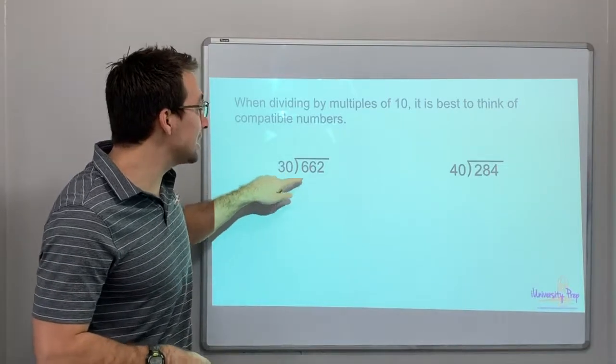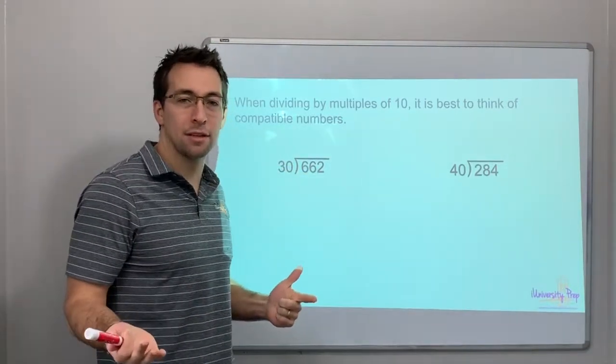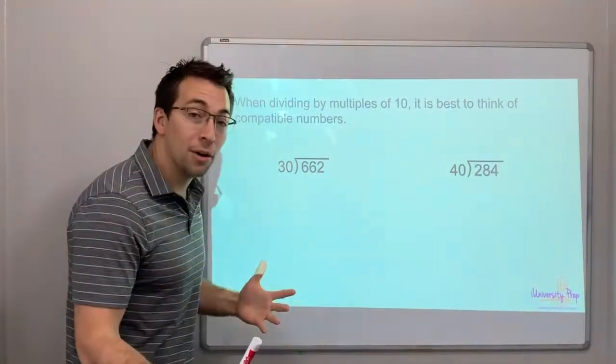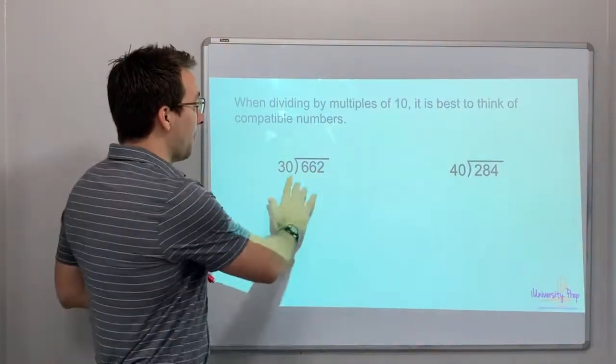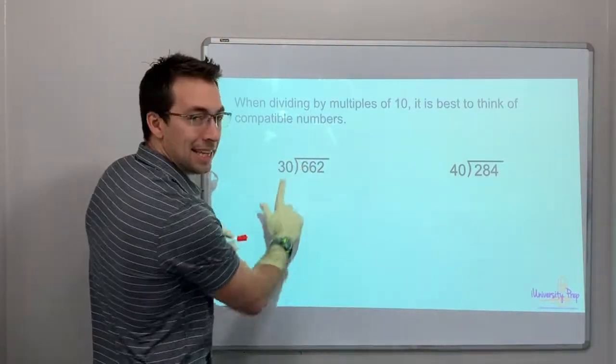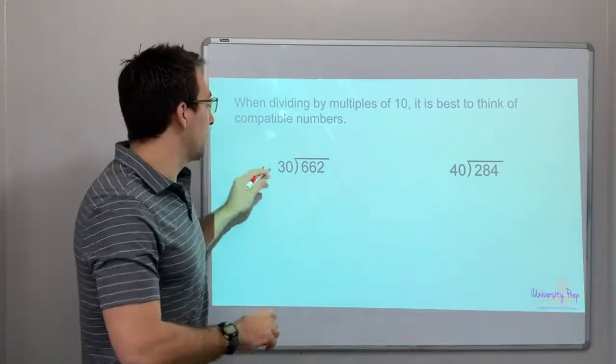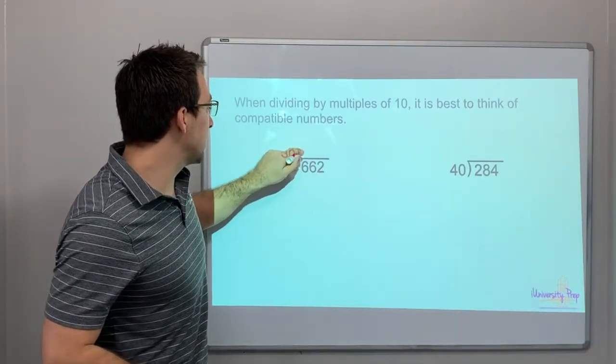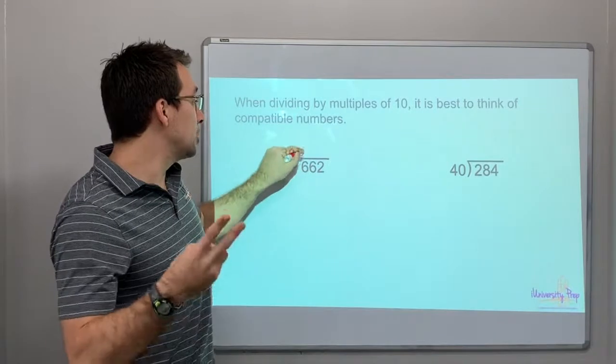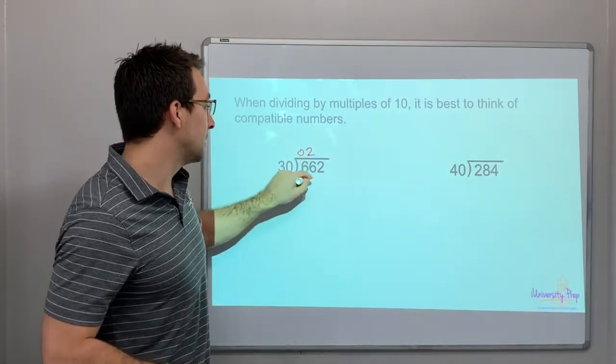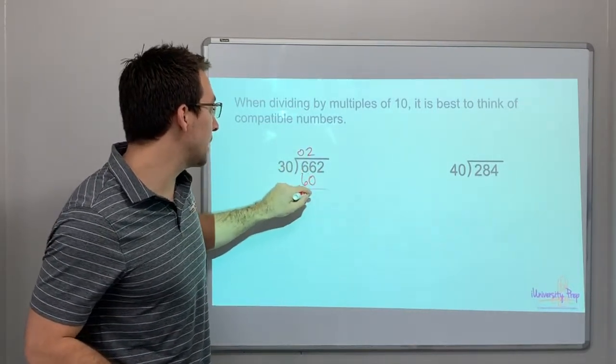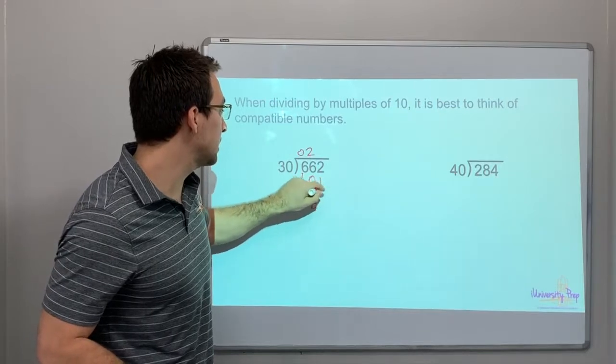30 goes into 60 how many times? Oh, look, we can cover it. 3 goes into 6 how many times? 2. So 30 goes into 6, 0. 30 goes into 60, 2 times. That's 60, right? Then drop down, minus, so that's 62.